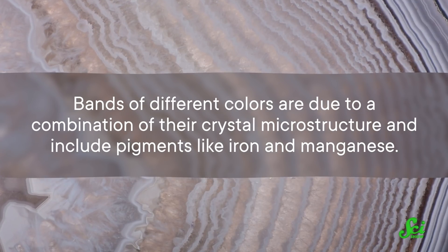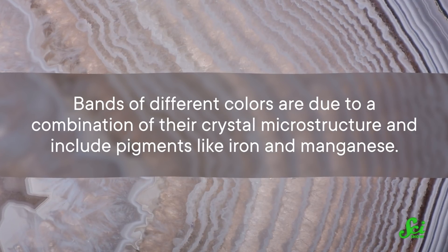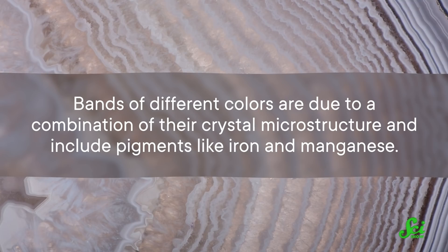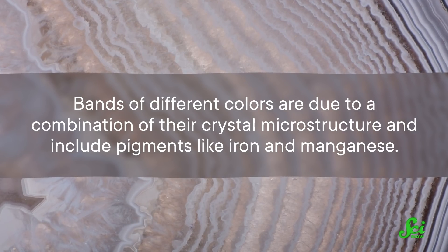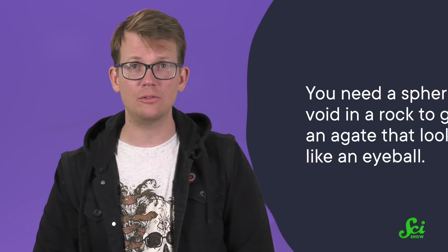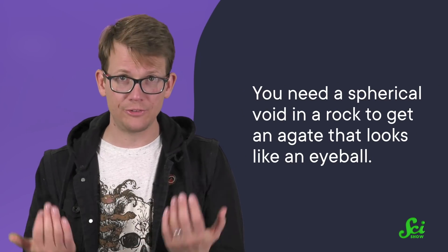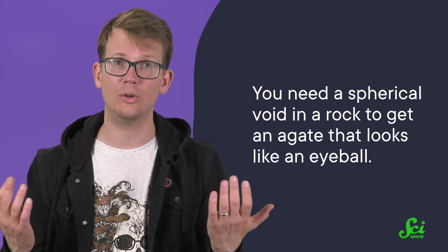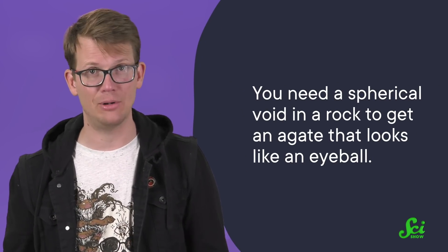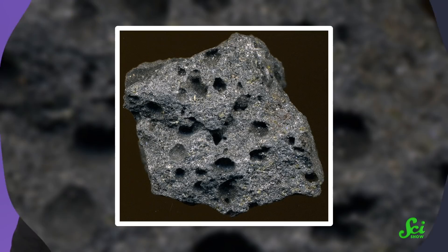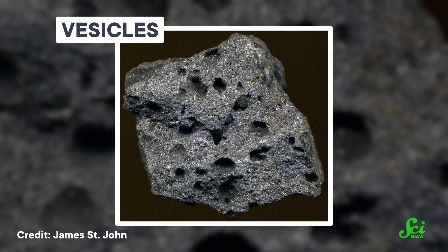Bands of different colors are due to a combination of their crystal microstructure and pigments like iron and manganese. Agates come in all shapes and sizes, but you need a spherical void in a rock to get one that looks like an eyeball. Gas bubbles in lava, called vesicles, work perfectly for this.